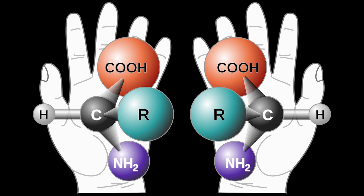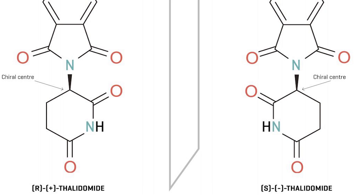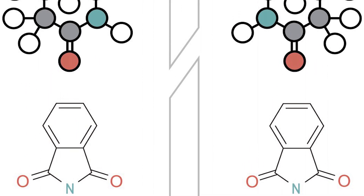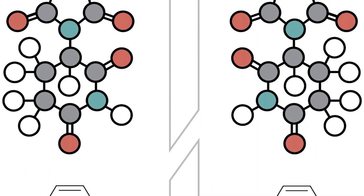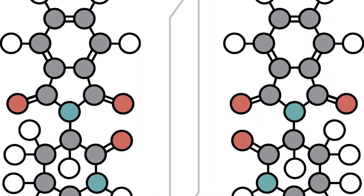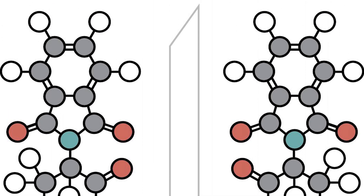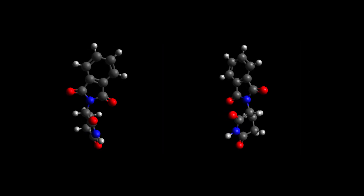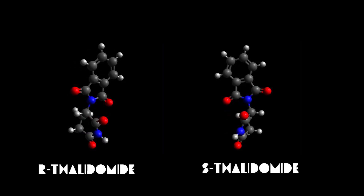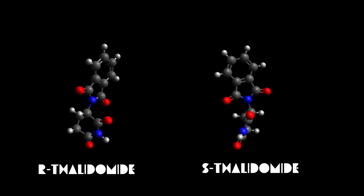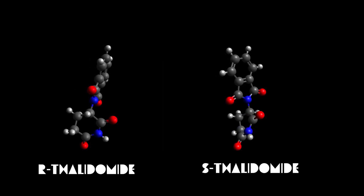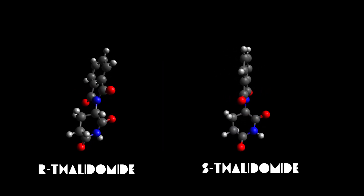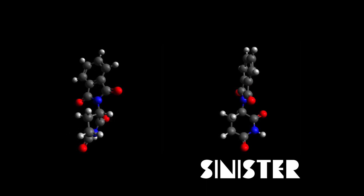Thalidomide is a drug with this property. One enantiomer of thalidomide can help with insomnia and morning sickness, but its evil twin will bring horrible birth defects. The two enantiomers of thalidomide are the rectus, or right-hand R version, and the left, the S version. The S, in this case, stands for sinister — Latin for left.